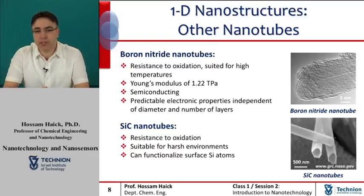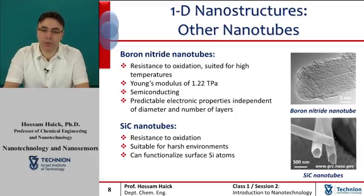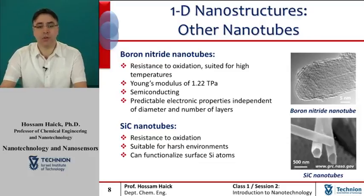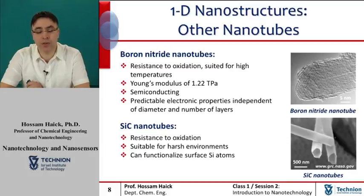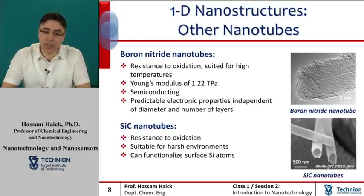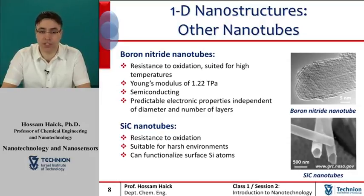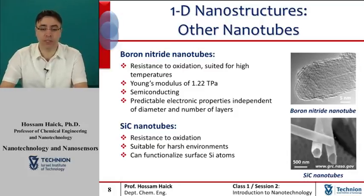Two representative examples of inorganic nanotubes include, as can be seen on the slide, boron nitride nanotubes, which have a high resistance to oxidation suited for high temperatures, a Young's modulus of 1.22 terapascals, and behave as a semiconducting material with predictable electronic properties. Additionally, silicon carbide nanotubes also have high resistance to oxidation, are quite suitable for harsh environments, and can be functionalized with organic monolayers on their surfaces.